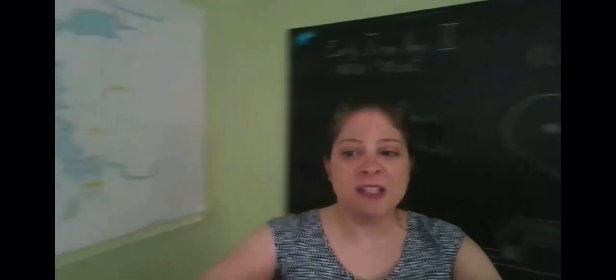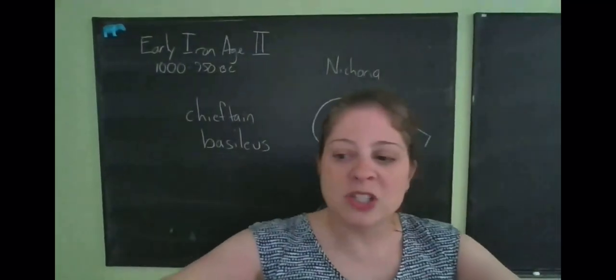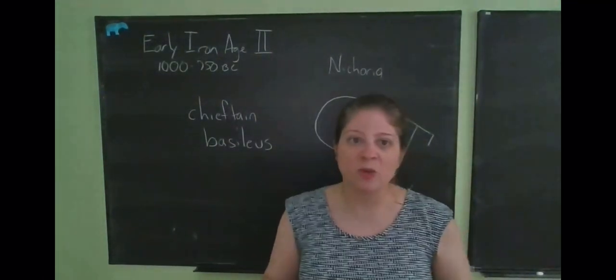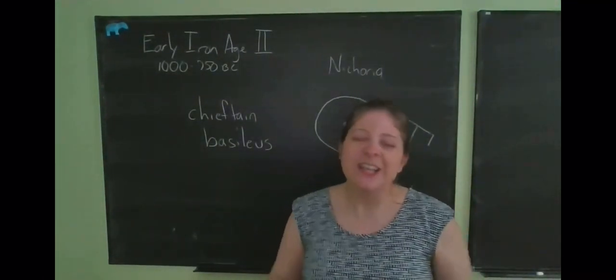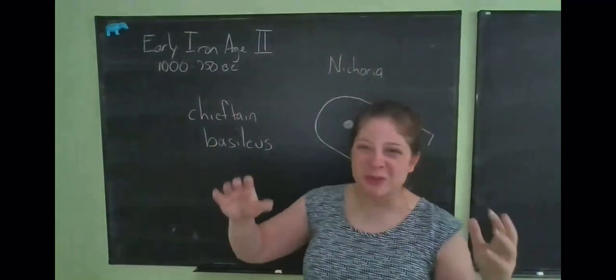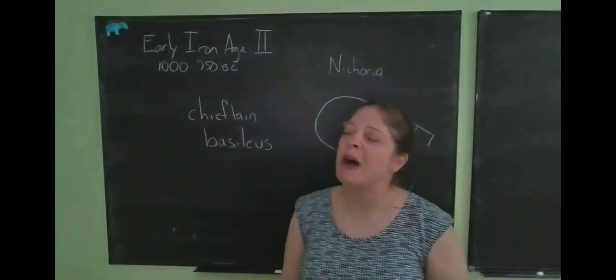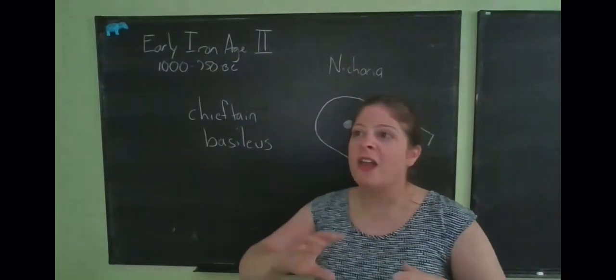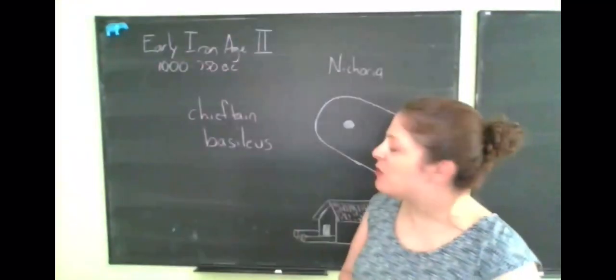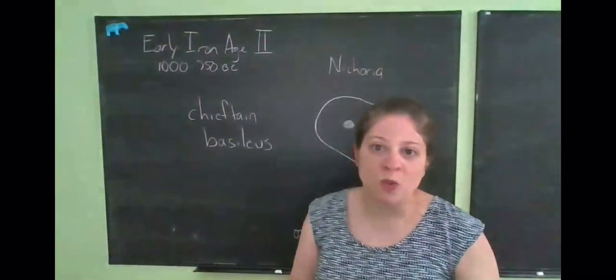And so at these two sites, we find evidence for these larger apsidal structures. And remember, Early Iron Age one saw no monumental building. So this would be an example of a kind of low monumental building. It's not huge like a Mycenaean palace, but it's bigger than the usual homes and buildings that we find in early Iron Age I villages.